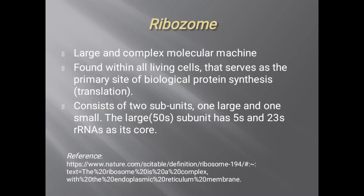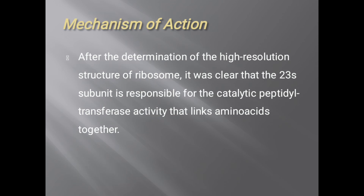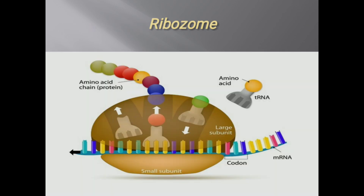The last type is the ribosome. Ribosomes are large and complex molecular machines found within all living cells that serve as the primary site of biological protein synthesis. They consist of two subunits: the larger 50S subunit, which has 5S and 23S RNAs as its core, and a smaller subunit. After determination of the high-resolution structure of the ribosome, it was clear that the 23S subunit is responsible for catalytic peptidyl transferase activity that links amino acids together. The smaller subunit has mRNA attached, and tRNA recognizes amino acids according to codons on the mRNA, attaches to them, and proteins are formed and released.